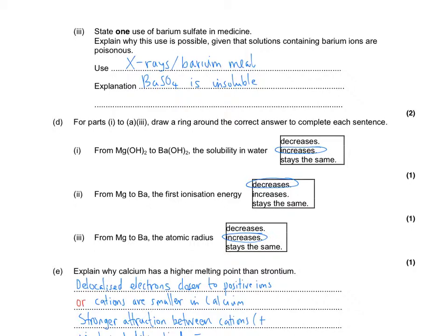Then we're asked to think about trends. Solubility in water of the hydroxides. Remember, magnesium hydroxide is sparingly soluble. It forms white precipitate. So as you go down the group, it increases in solubility. So barium hydroxide is soluble.